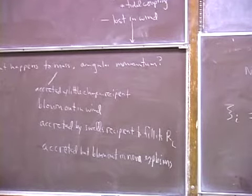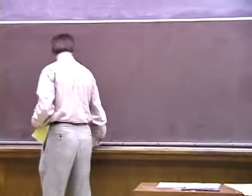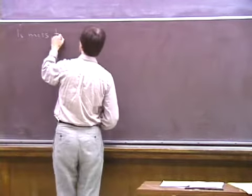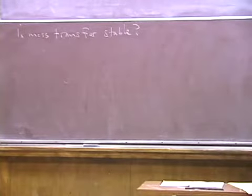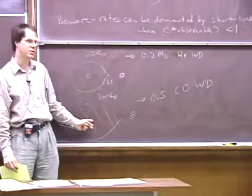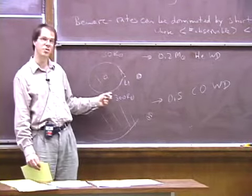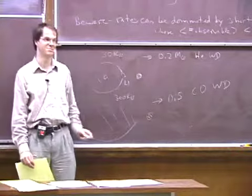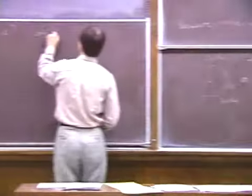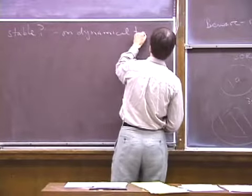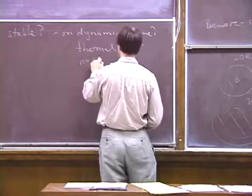An important question is whether the mass transfer is stable. Is it transferred on the nuclear timescale — the time for the radius to swell — or on the thermal timescale — the time for radiation to leak out, which is much shorter — or in just a few orbits? All three cases occur in nature. So mass transfer can occur on dynamical, thermal, or nuclear timescales.